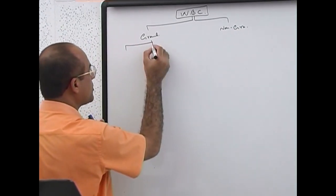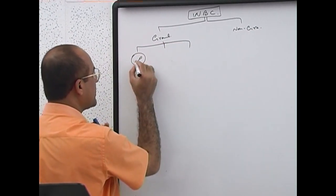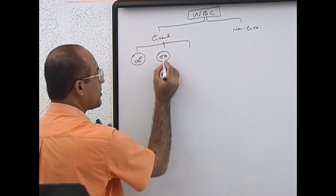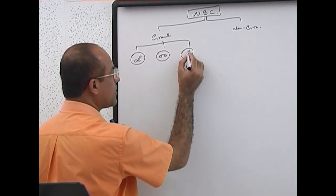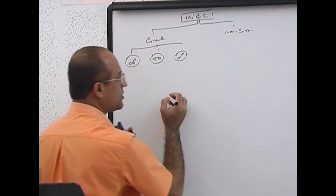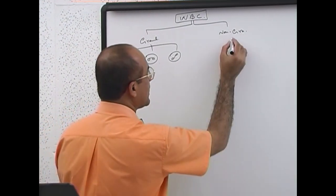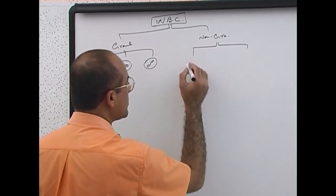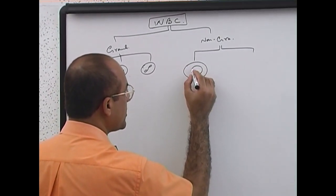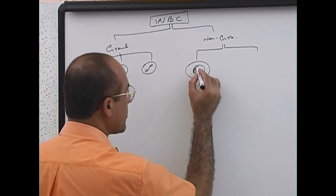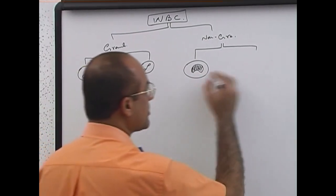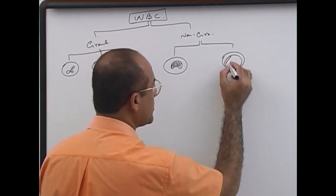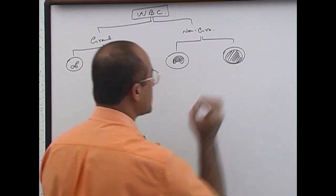Granulocytes were divided into neutrophils, eosinophils, and basophils. And non-granulocytes are divided into two: monocytes, which have a kidney-shaped nucleus, and lymphocytes.